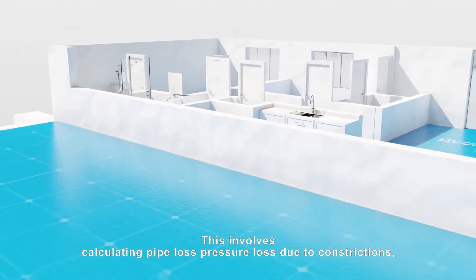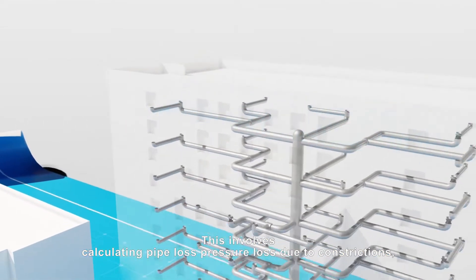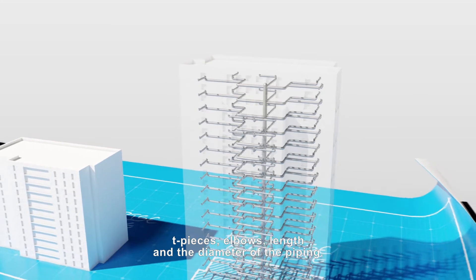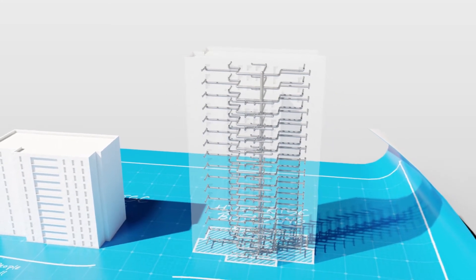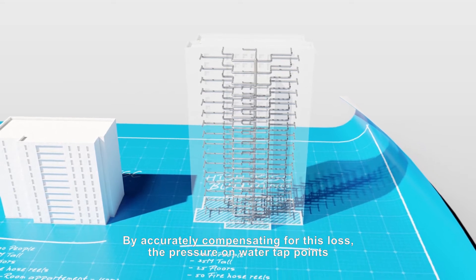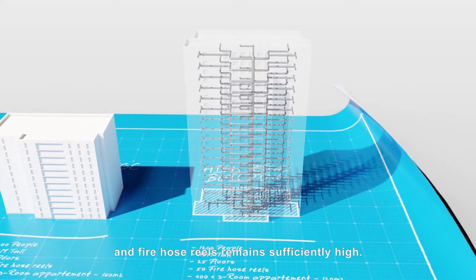This involves calculating pipe loss, pressure loss due to constrictions, T-pieces, elbows, length and the diameter of the piping. By accurately compensating for this loss, the pressure on water tap points and fire hose reels remains sufficiently high.